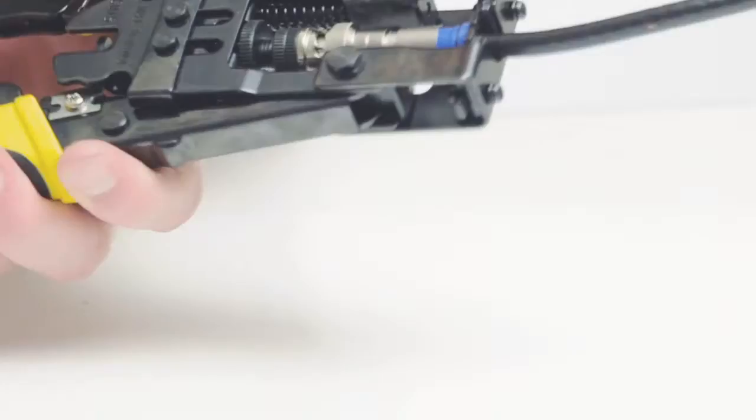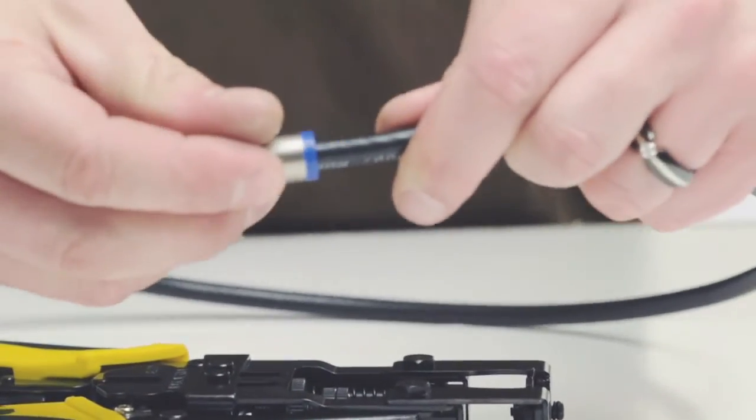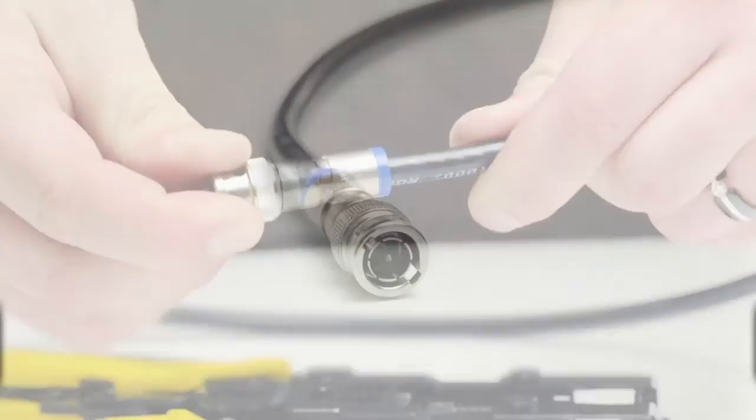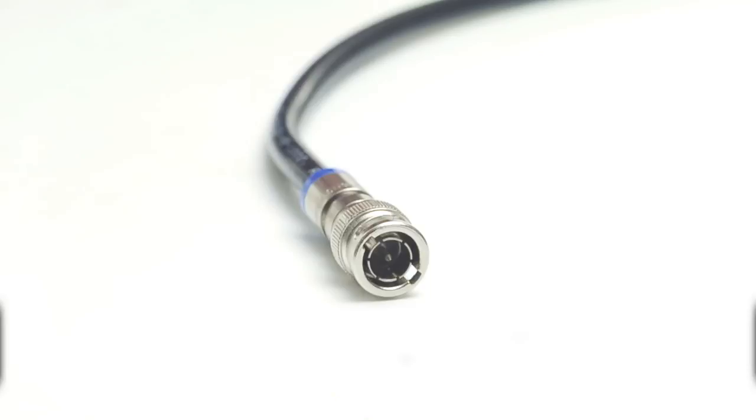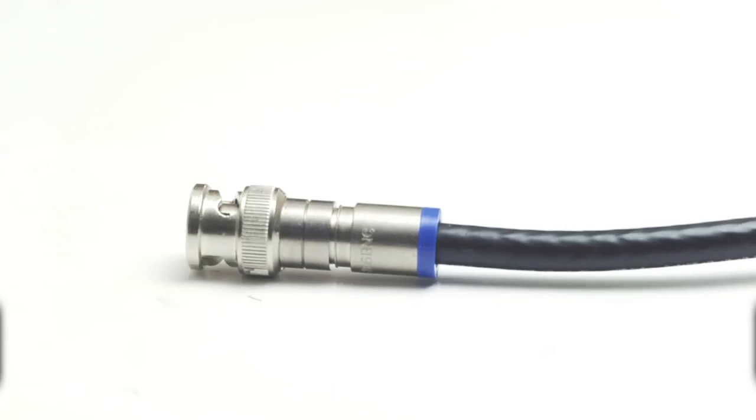With proper pressure, compress the connector. This securely attaches it to the cable. Give it a tug to make sure it's properly seated, and you have successfully terminated a BNC male compression connector.